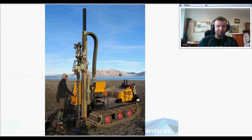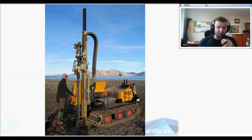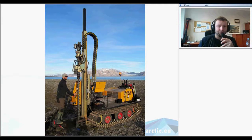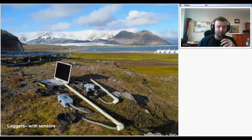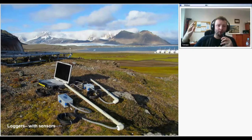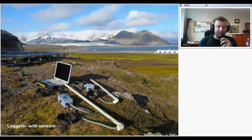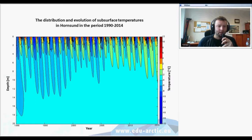Scientists are interested in ground temperatures because they are important for hydrological cycles. We drill boreholes using a drilling rig — this equipment drills the hole and in this hole we put sensors and loggers. These sensors measure ground temperatures and give us data for longer periods; if we monitor the ground temperatures these sensors can stay for many years, giving us information about the thermal state of the ground. For example, this graph shows the thermal state in Hornsund, which is the Polish Polar Station in Spitsbergen.